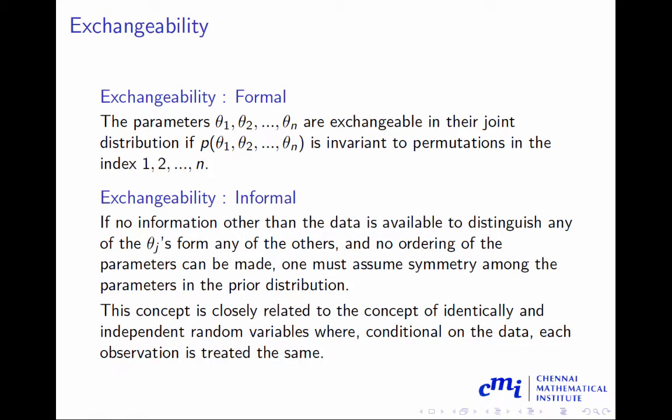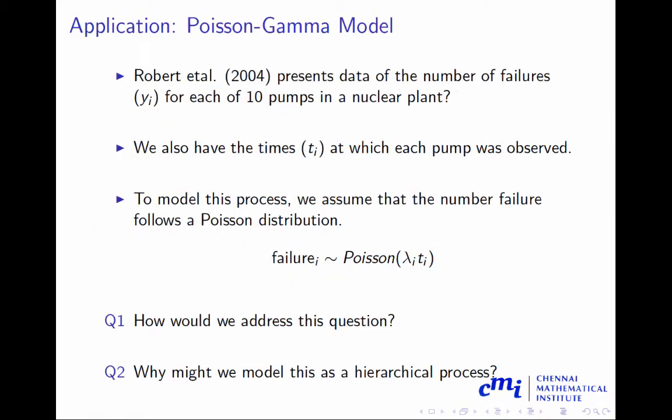Now we will talk about an application on the Poisson-gamma model. This example I have also taken from Gelman's book. The actual reference is Robert et al. 2004, which represents the data of the number of failures y_i for each of 10 pumps in a nuclear plant. In a nuclear plant there are 10 pumps which pump the coolant water to maintain the temperature in the fusion area. It measures the failure at a particular time point. t_i is the time at which each pump was observed.